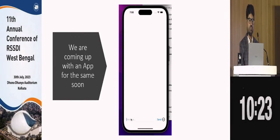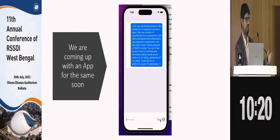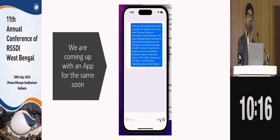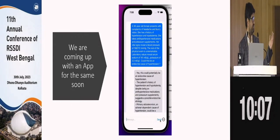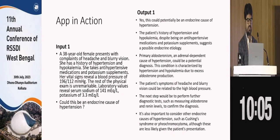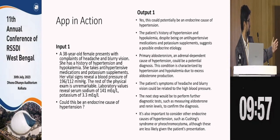The app is similar — you put in a question, it gives you the answer, and you can chat with it asking follow-up questions, just like an examiner in your DM exam. For example, let's input a clinical case: a 38-year-old female presents with headache, blurry vision, hypokalemia, and hypertension. She's on antihypertensive medications, BP is high, potassium is 3.3. Could this be an endocrine cause of hypertension?